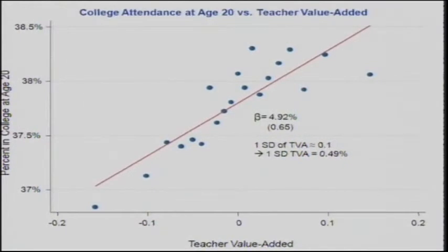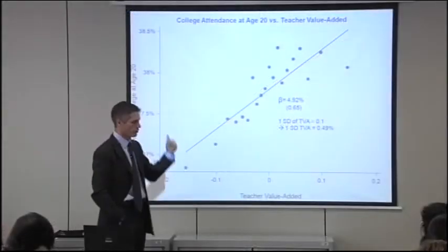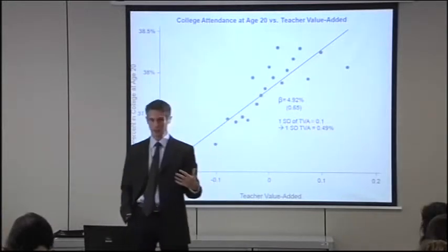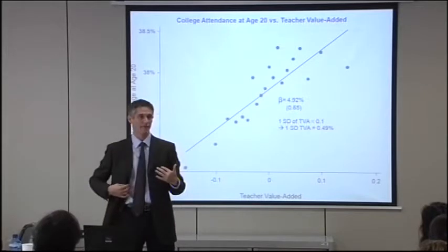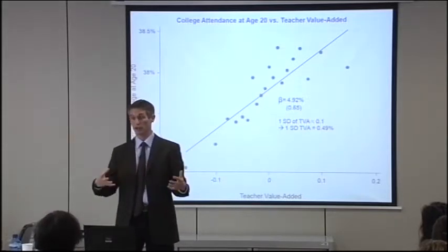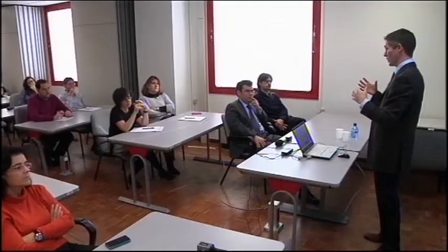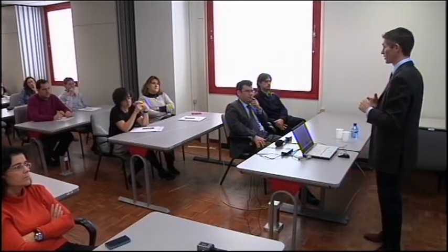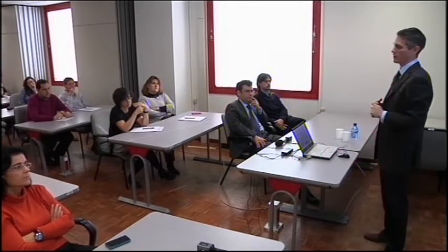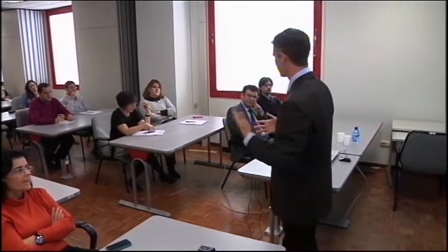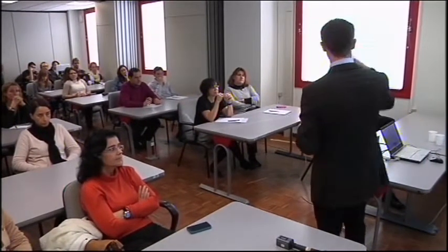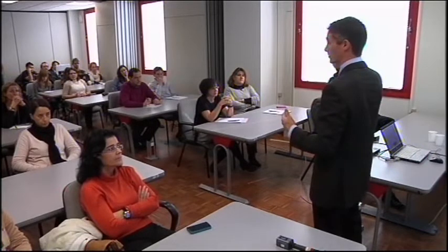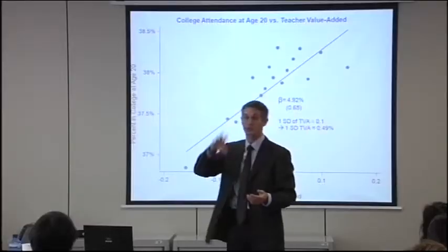This is college attendance at age 20. One thing you'll see in the graphs is that we get the relationships we expect, but there's a lot more noise. Predicting next year's test score with all the data and value added measures gives very strong predictions, but predicting whether you go to college or what you earn in the labor market is harder. There are people who do well despite having done poorly in school, and vice versa — there's a lot of noise in how someone earns in the labor market.